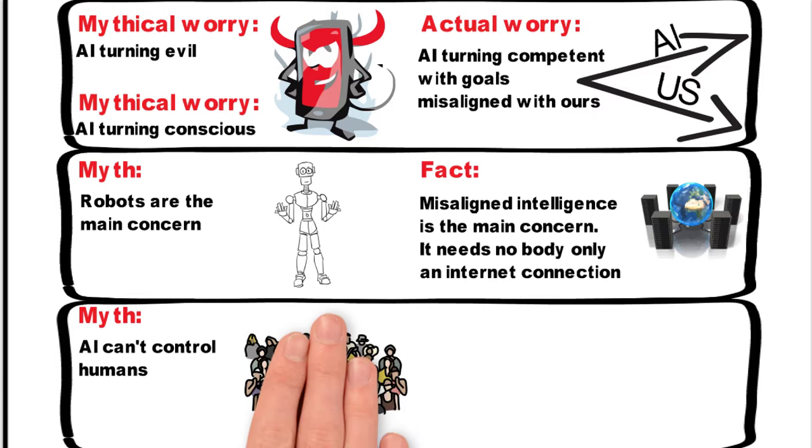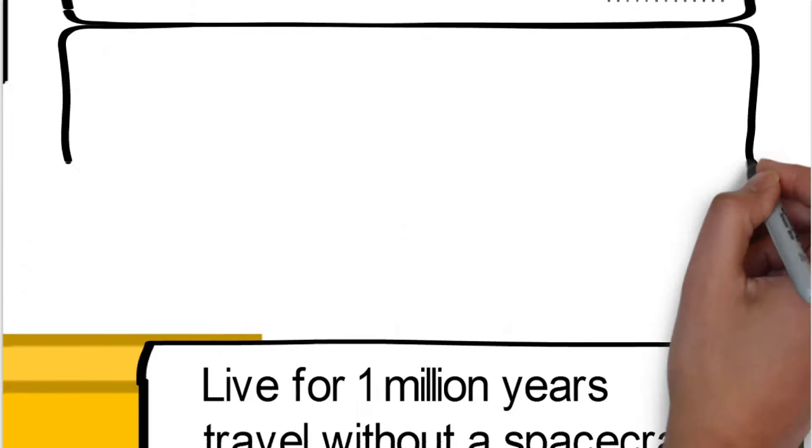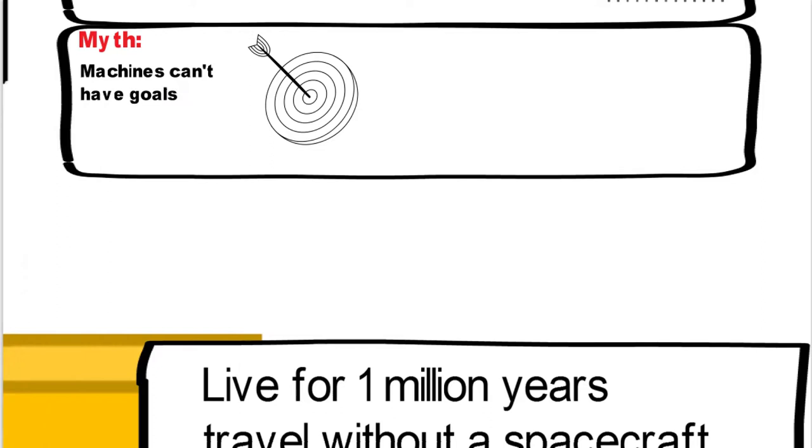The other thing is our robots are the concern. Really, it's misaligned intelligence is the main concern. It needs no body, only an internet connection. Then AI can't control humans is the myth, because intelligence enables control. We control tigers by being smarter. So intelligence is what gives us the capability to control.